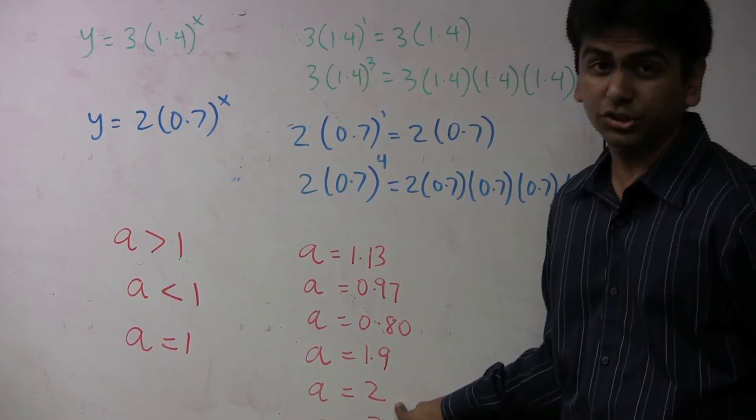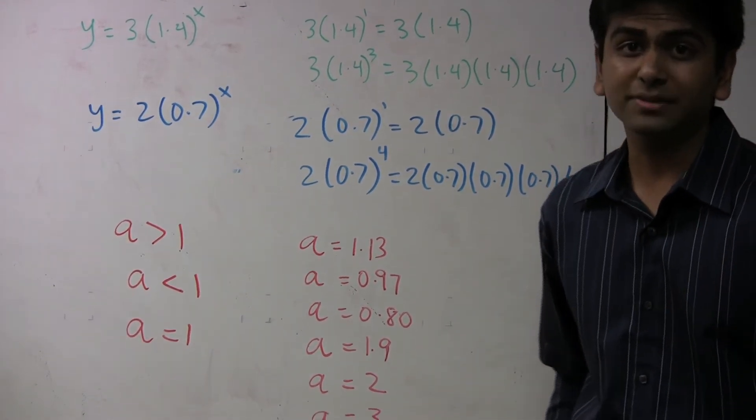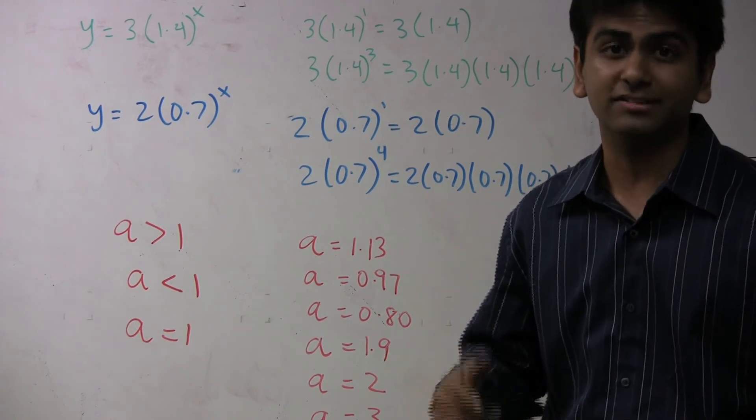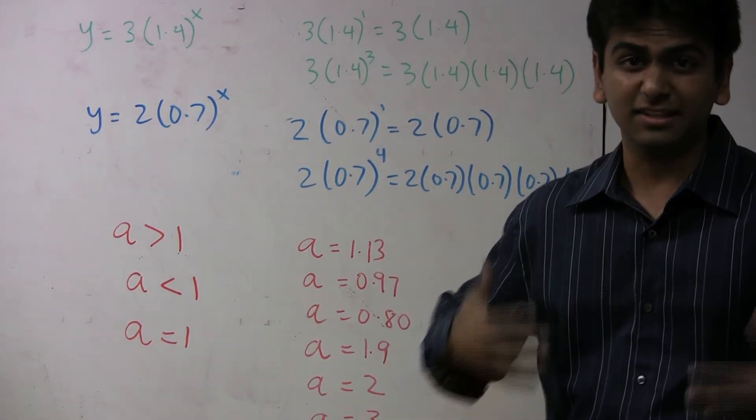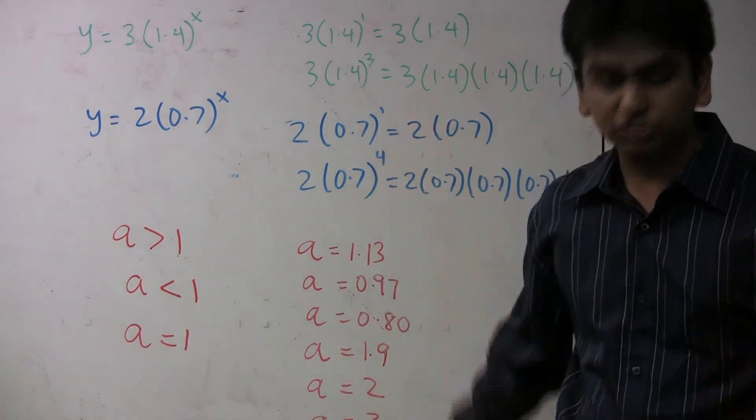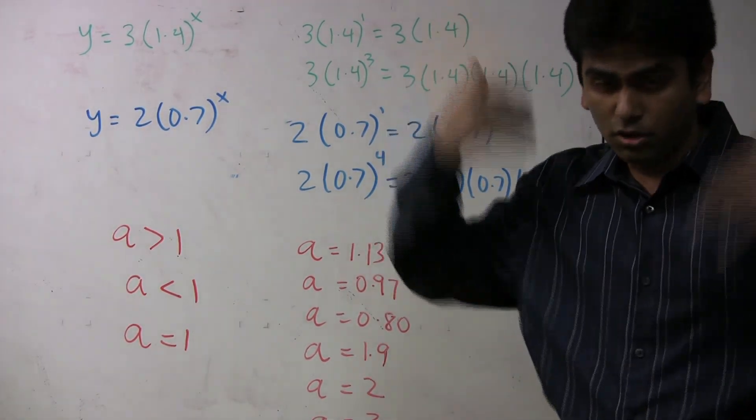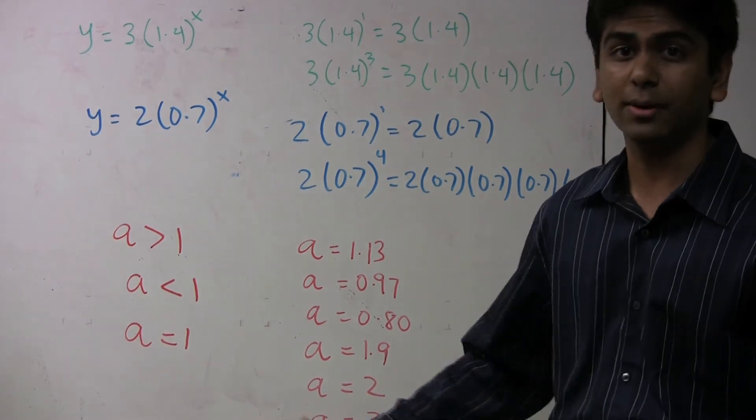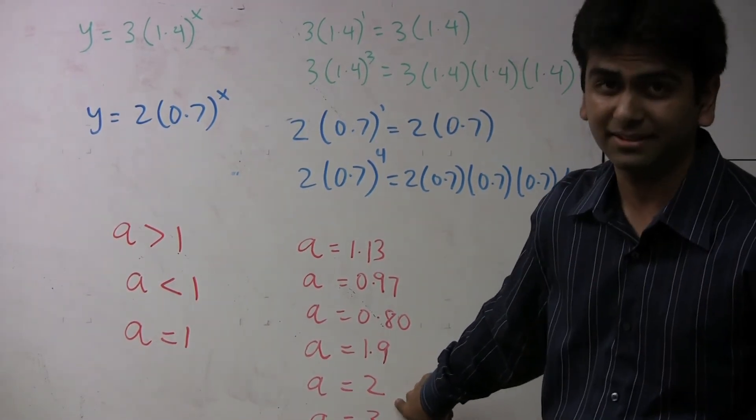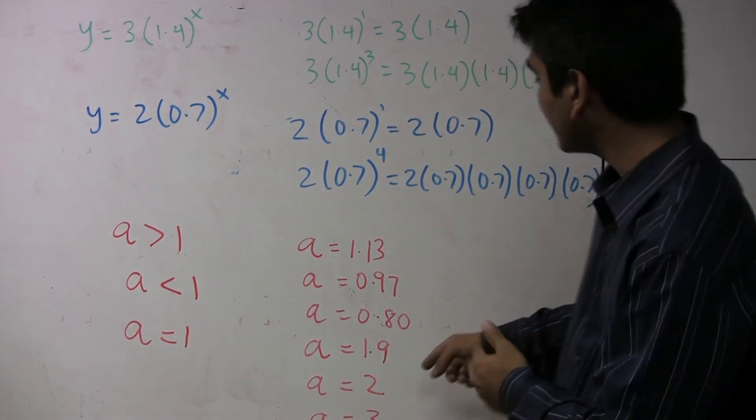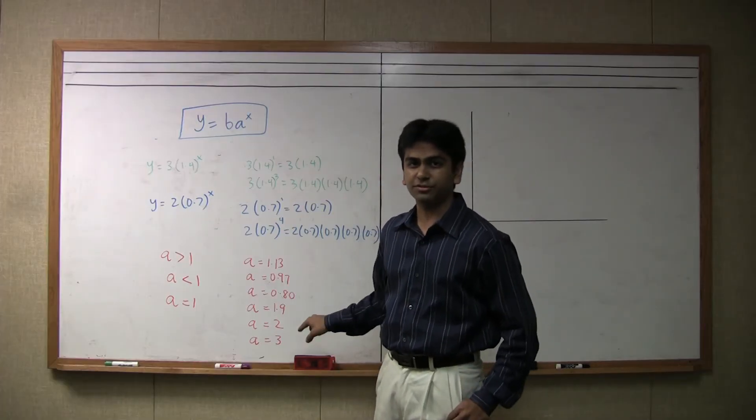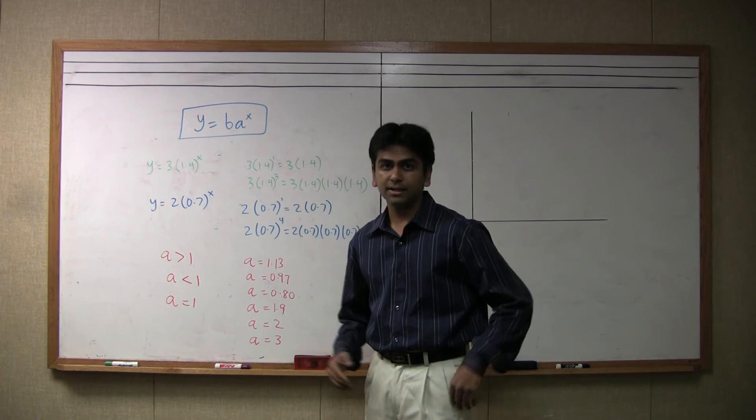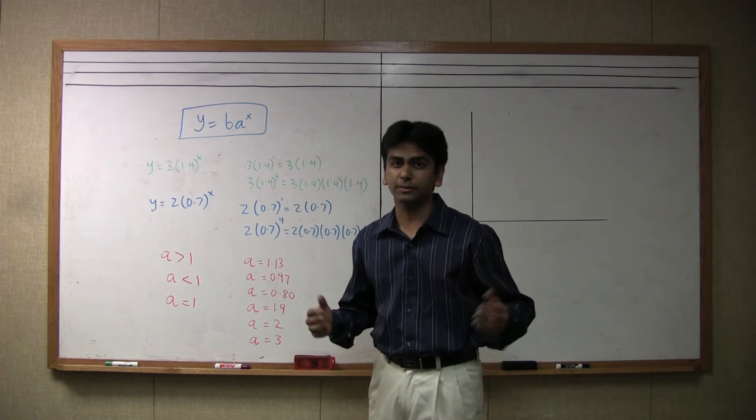What if a is equal to 2? Then your value is increasing by 100%, since it's 1 more than 1. This means that it's doubling. It's increasing by 100%. This is one Rohan. If I increase by 100%, which is another Rohan, then you'll have two Rohans. This is called doubling. That's what happens when a is 2. And so similarly, when a is equal to 3, that is tripling, because you're increasing by 200%.